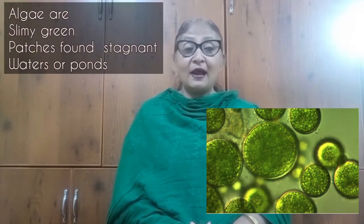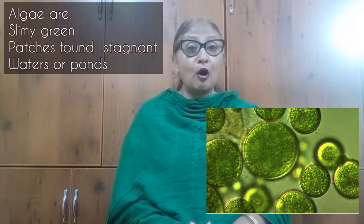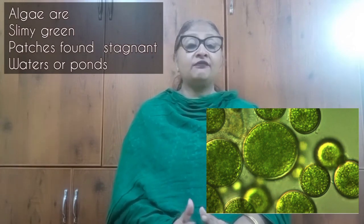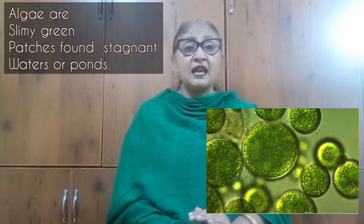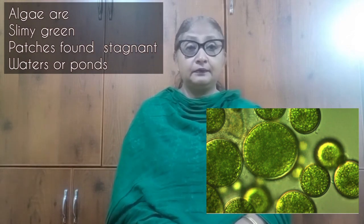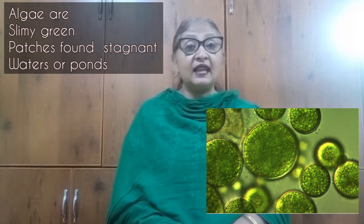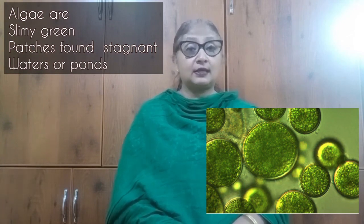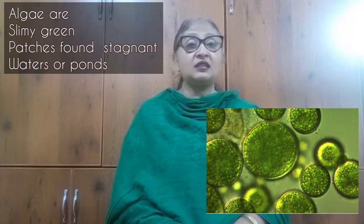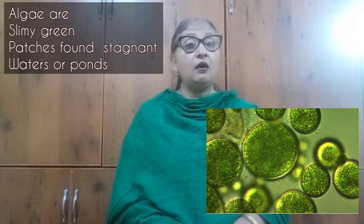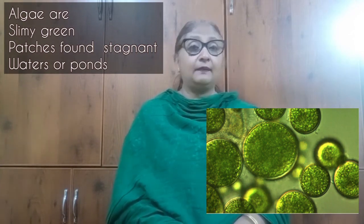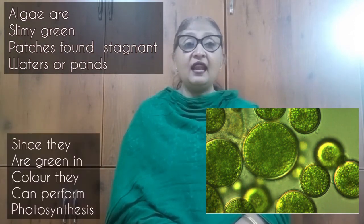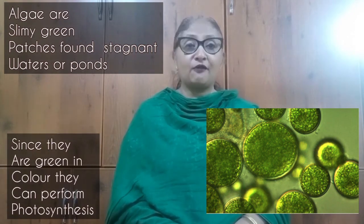Then, what are algae? Often, when you have seen a pond or a puddle of stagnant water, the water appears green in color. These slimy green patches found in stagnant water or ponds are known as algae. Since they are green in color, they are also able to perform photosynthesis. With that, we have come to the end of today's session. Thank you.